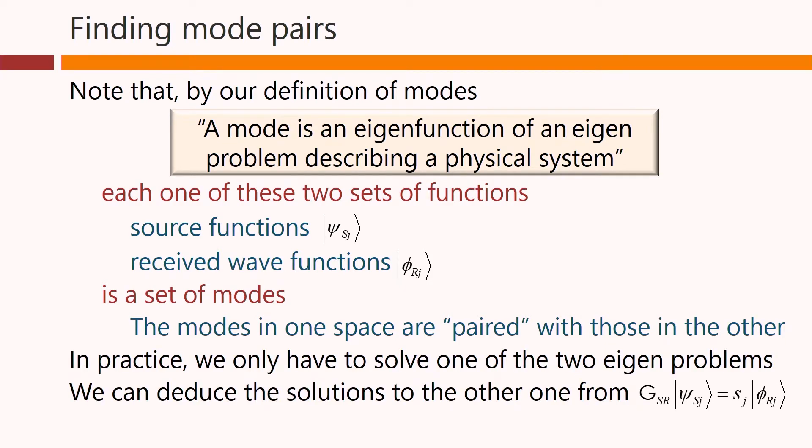In practice, we only have to solve one of the two eigenproblems. We can deduce the solutions to the other one from, for example, G_sr operating on ψ_sj gives us S_j times φ_rj.